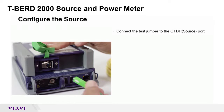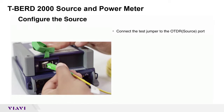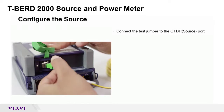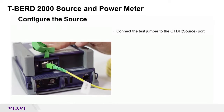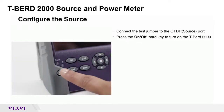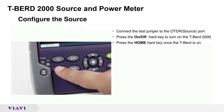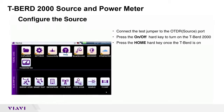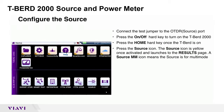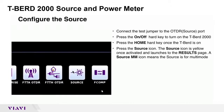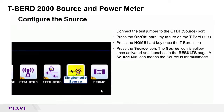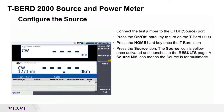Connect the test jumper to the OTDR, or the source, port. Press the ON-OFF hard key to turn on the TBR2000. Press the HOME hard key, then press the source icon. The source icon turns yellow once activated and launches to the results page.